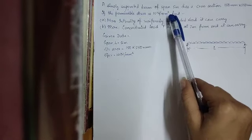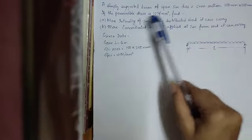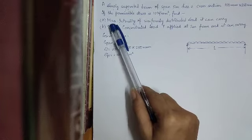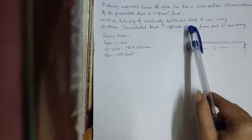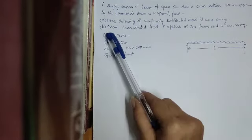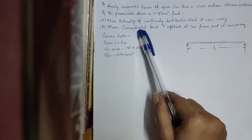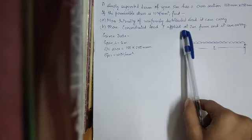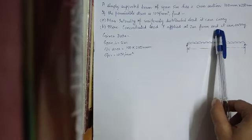If the permissible stress is 10 Newton per millimeter square, then find: subdivision A, maximum intensity of uniformly distributed load that it can carry, and subdivision B, maximum concentrated load P applied at a distance of 2 meters from any end that it can carry.